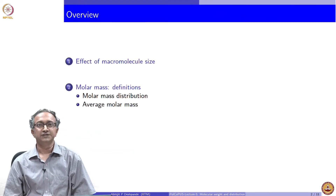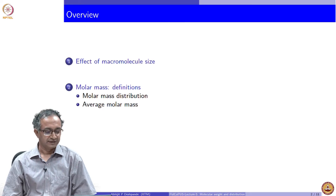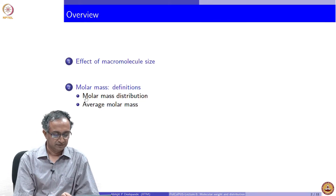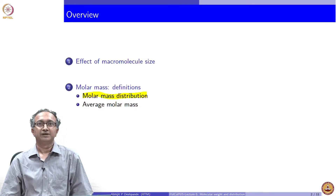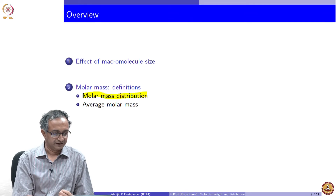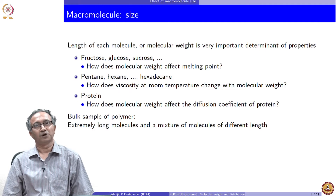We will do this by first briefly reviewing what is the effect of molar mass or molecular weight, and then we will look at how we define a distribution — both the distribution and an average. What is the influence of size of a molecule on properties?